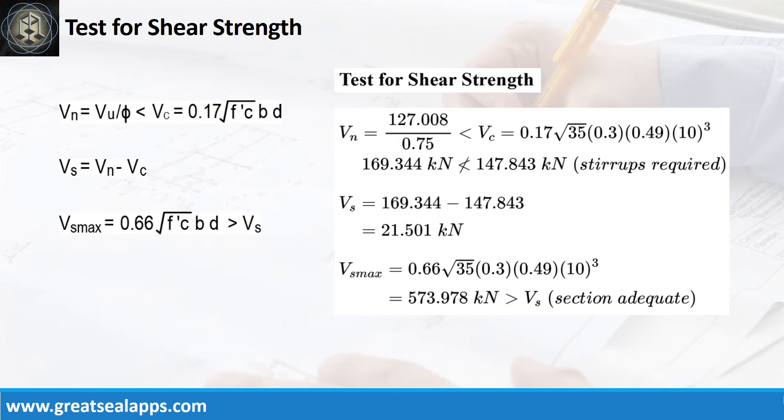The shear force from dead load is 57.84 kN, and live load is 36 kN, for a factored shear force of 127.008 kN. The nominal shear force is 169.344 kN, greater than 147.843 kN, concrete capacity. Additional shear capacity from stirrup is 21.501 kN, less than 573.978 kN maximum stirrup capacity.